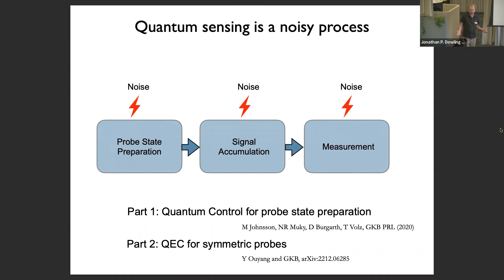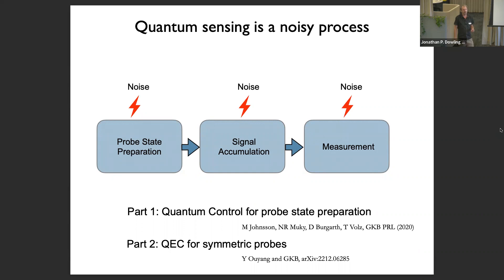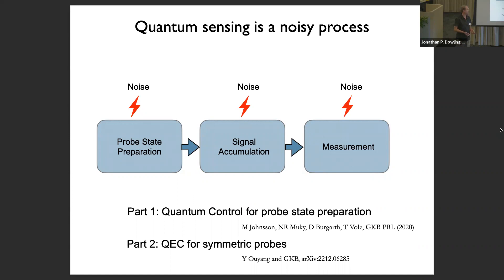We should be seeing sensors that actually use entanglement by now, but we don't. Why is this? It's the same problem as quantum computers: noise is everywhere and we don't know how to tame it. You need entangled probe state preparation to get a useful state for sensing, there's noise during that, noise while accumulating the quantum signal, and in obvious cases your gain from entanglement is immediately lost from just one error. I'll talk about a couple of strategies to make these things work.